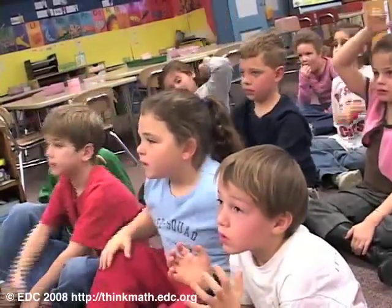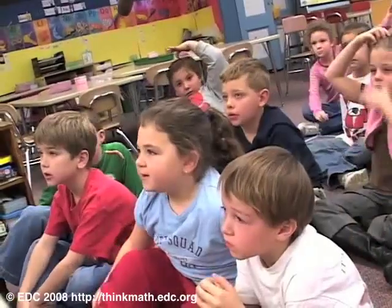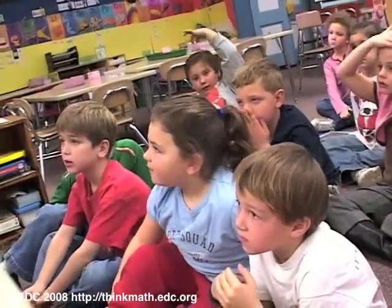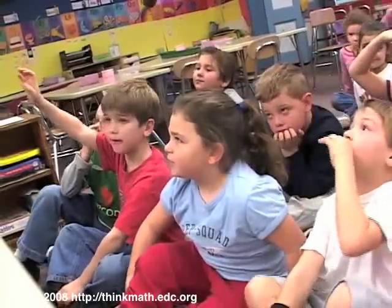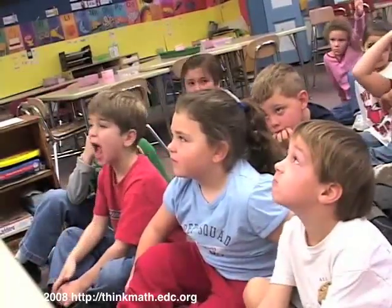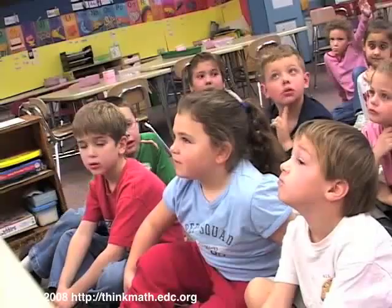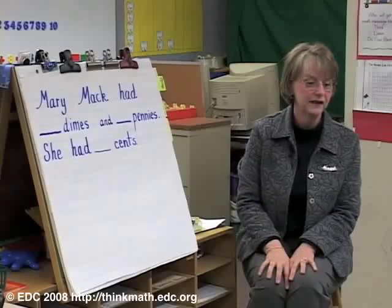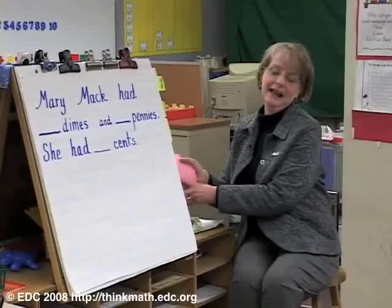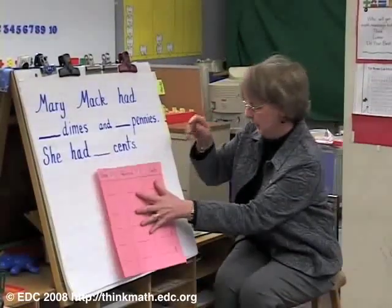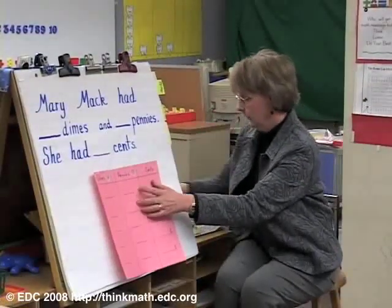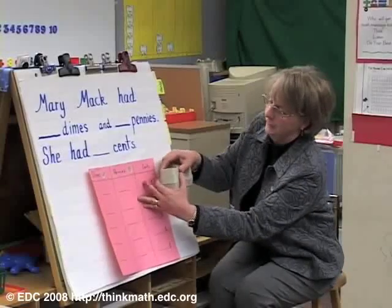Maddie, what do you think? Five pennies. I don't know the dimes. How many dimes would you like her to have? Ten. We want her to have ten dimes. Sometimes when we do our stories, we can make a chart, so let's make a chart this time.